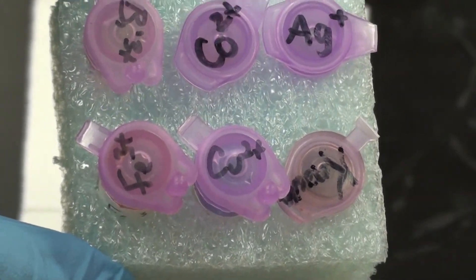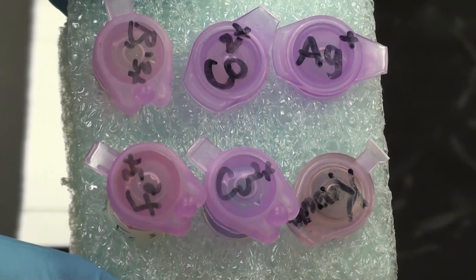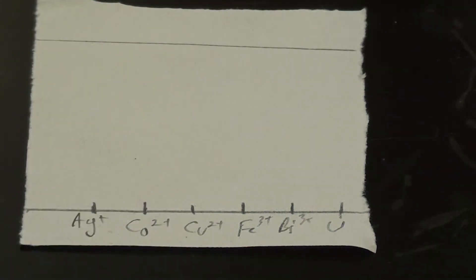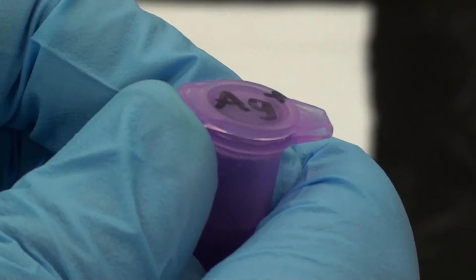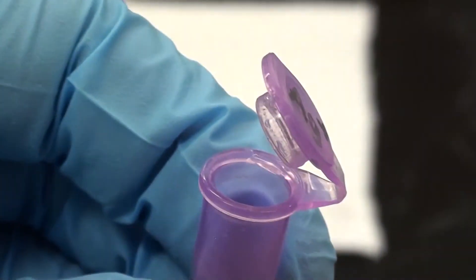Now there's two kinds of micro test tubes that you're likely to experience. The first kind is just the kind where you have the simple flip top and the idea is that you just flick that open and that opens it up. That's fairly simple.